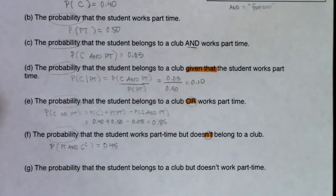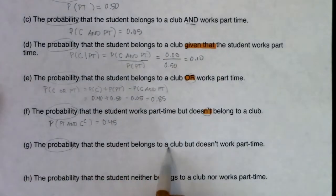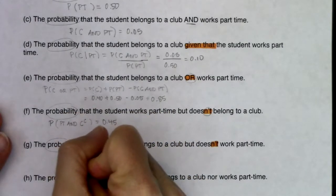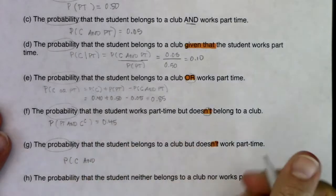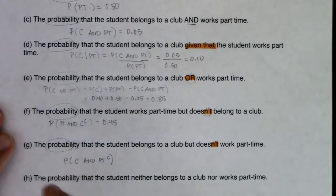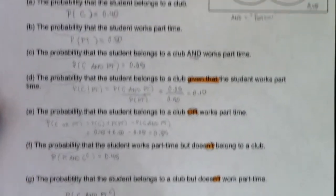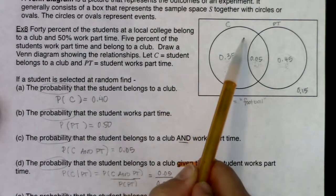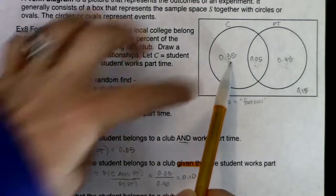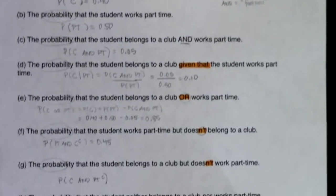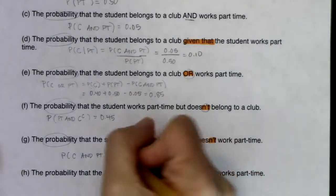For part G, the probability a student belongs to a club but does not work part-time — P(C and PT complement). I want to be in the club circle but specifically not in the part-time circle. On the Venn diagram, that's the left moon — 0.35.